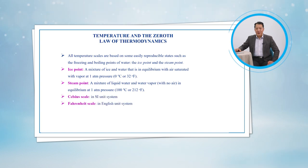The temperature scales used in the SI and in the English system today are the Celsius scale and the Fahrenheit scale, respectively. On the Celsius scale, the ice and steam points were originally assigned the values of 0 and 100 degrees centigrade, respectively. The corresponding values on the Fahrenheit scale are 32 and 212 degrees Fahrenheit. These are often referred to as two-point scales since temperature values are assigned at two different points.